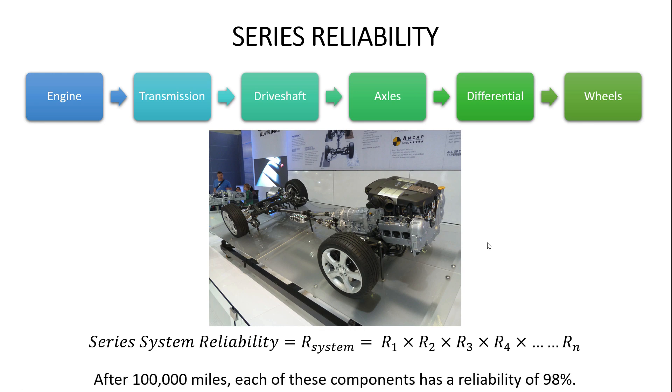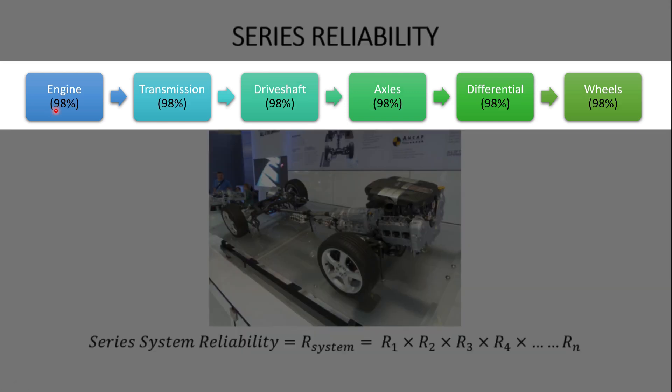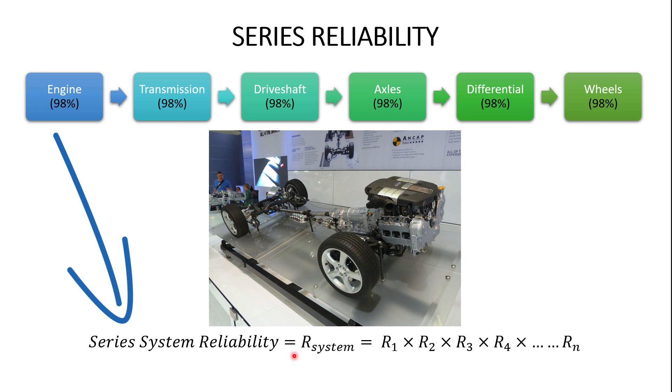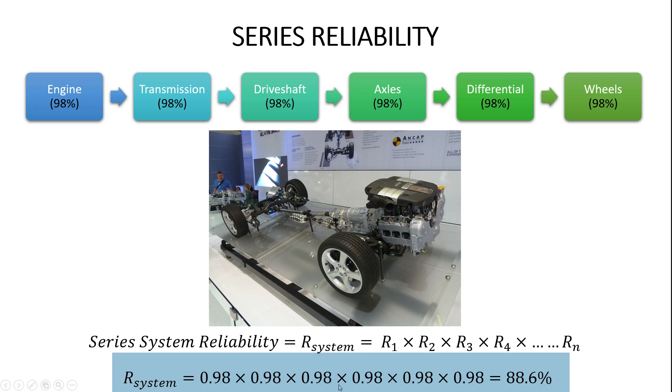And let's assume that we've modeled these different components and subsystems. And at 100,000 miles, each of these components has an individual reliability of 98%. And the question is, what is the overall system reliability, if each component has a reliability of 98%. So you'll see I've updated this block diagram up here with the reliability of each particular subsystem. And now we can plug those numbers into our equation here to calculate the overall reliability of this entire powertrain. And that's simply just 98% times 98% times 98%, all the way down until we get the final cumulative reliability of this whole system is 88.6%. So that's a pretty easy example. Let's do one more example, where our components have different levels of reliability. So you can see how that kind of factors into the equation.